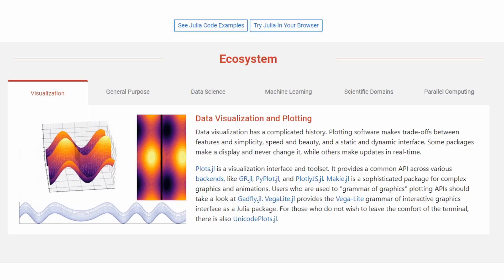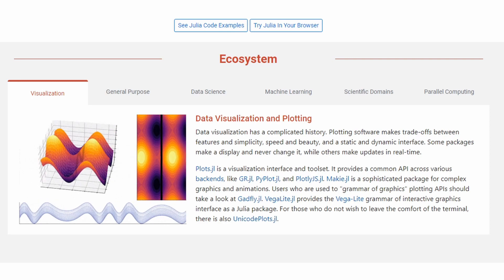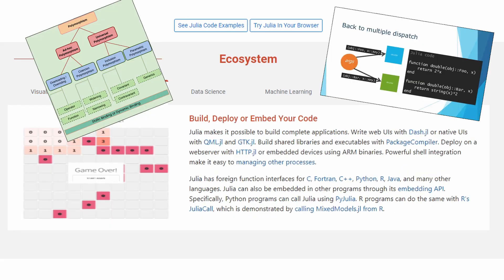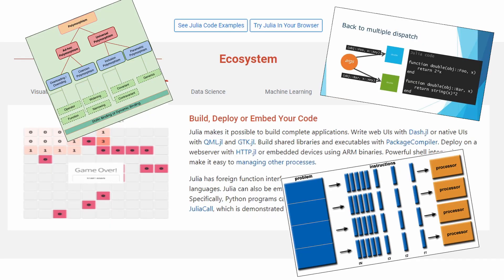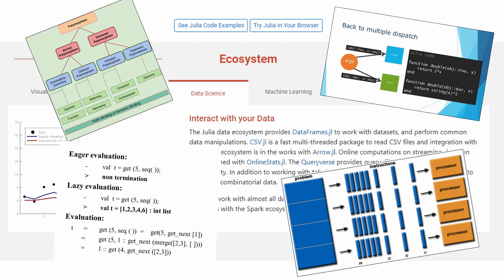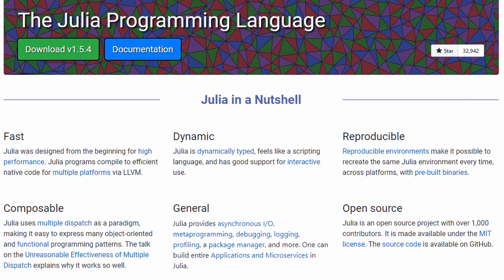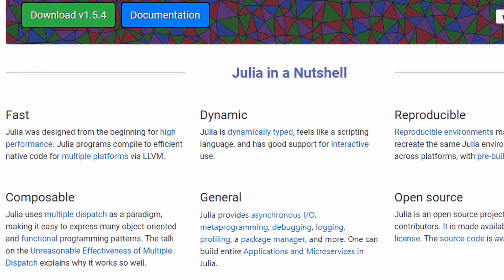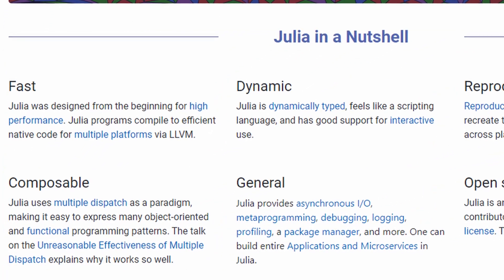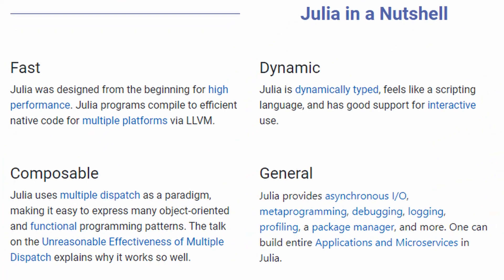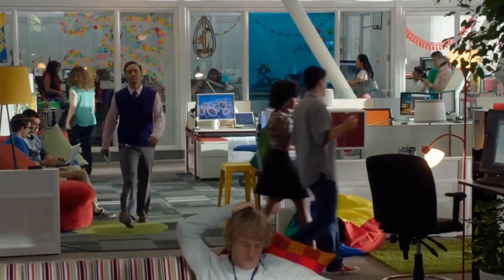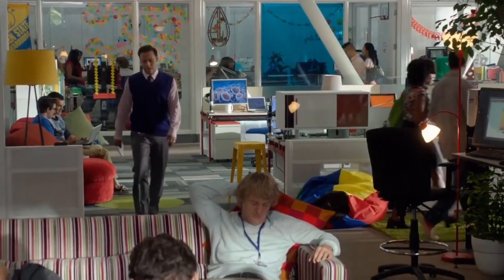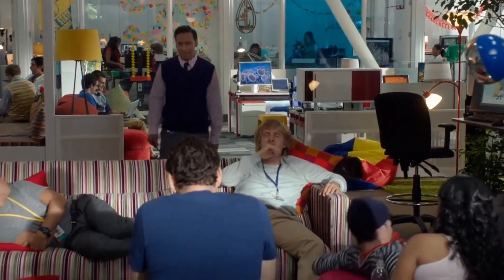Julia features parametric polymorphism, multiple dispatch paradigms, parallel and distributed computing, and eager evaluation. Julia utilizes a just-in-time compiler, which compiles all Julia code to machine code before actually executing it. Jeff Bezanson, Stefan Karpinski, Viral B. Shah, and Alan Edelman were the main crew to formulate Julia.